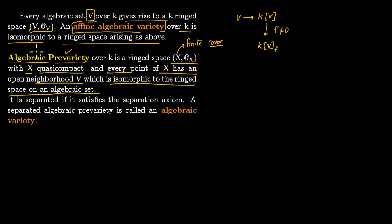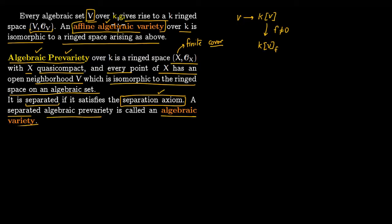An algebraic pre-variety is called separated if it satisfies the separation axiom, and a separated algebraic pre-variety is called an algebraic variety. The story is: you start from an affine algebraic variety coming from an algebraic set, then land in an algebraic pre-variety — which is just a gluing together of affine algebraic varieties so that locally it looks like a ringed space. To compute homology and cohomology groups we need an analog of Hausdorffness, and once we impose the separatedness condition we have an algebraic variety.